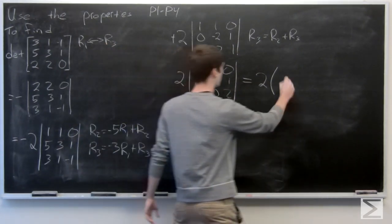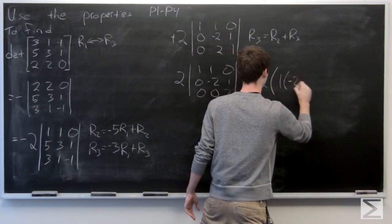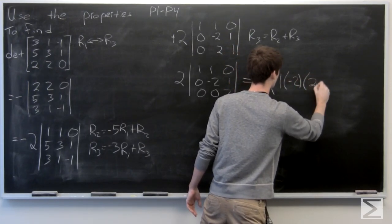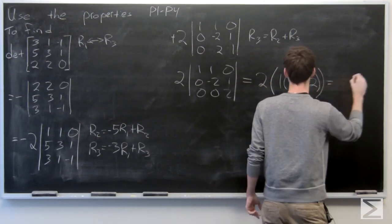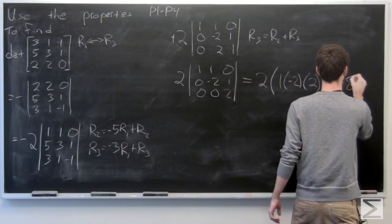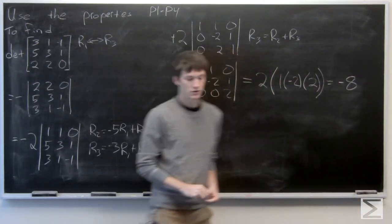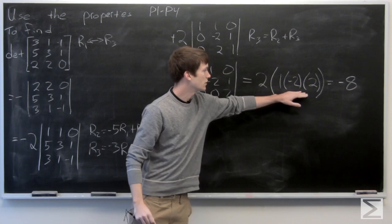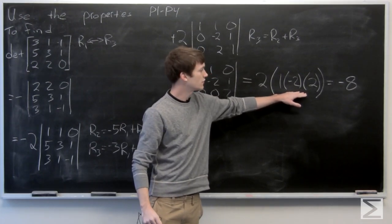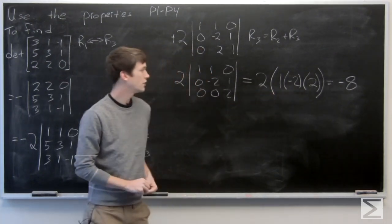So 1 times negative 2 times 2, which is equal to negative 8. So negative 2 times 2 is negative 4 times 2 is negative 8.